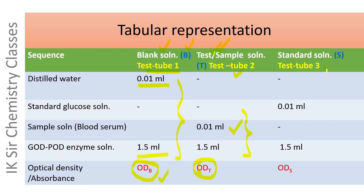In test tube number 3, a standard solution is taken — this is called the standard tube. It contains 0.01 ml standard glucose solution with concentration 5.5 millimole per liter, that is 99 milligram per 100 ml, and 1.5 ml GOD-POD enzyme solution which also contains 4-amino-antipyrine and phenol. These two solutions are mixed well, incubated at 37 degrees centigrade for 25 minutes, and then its optical density is measured, denoted by ODS — that is optical density of the standard solution.